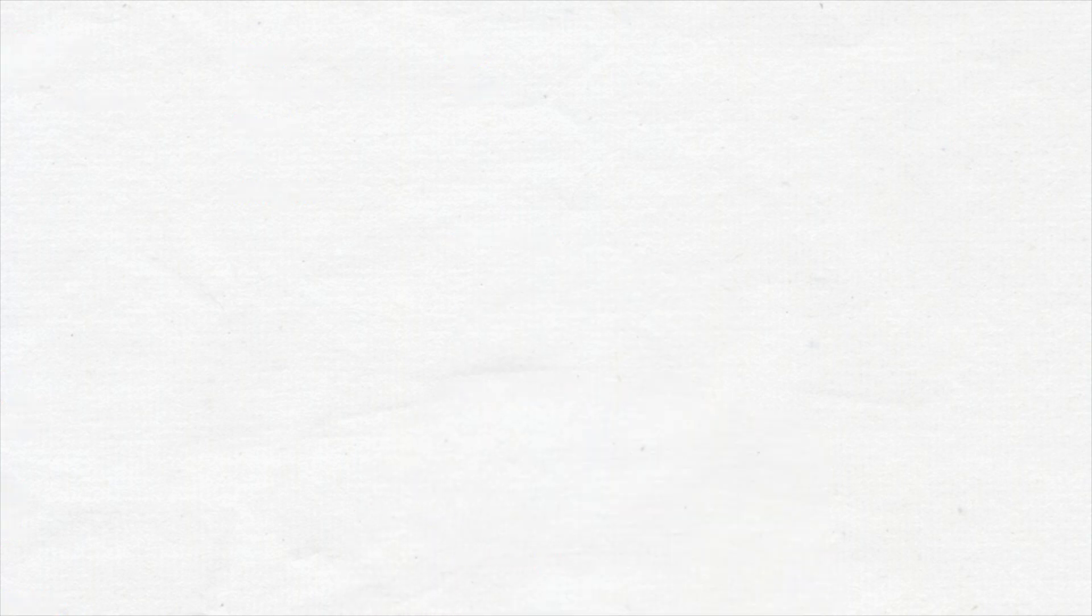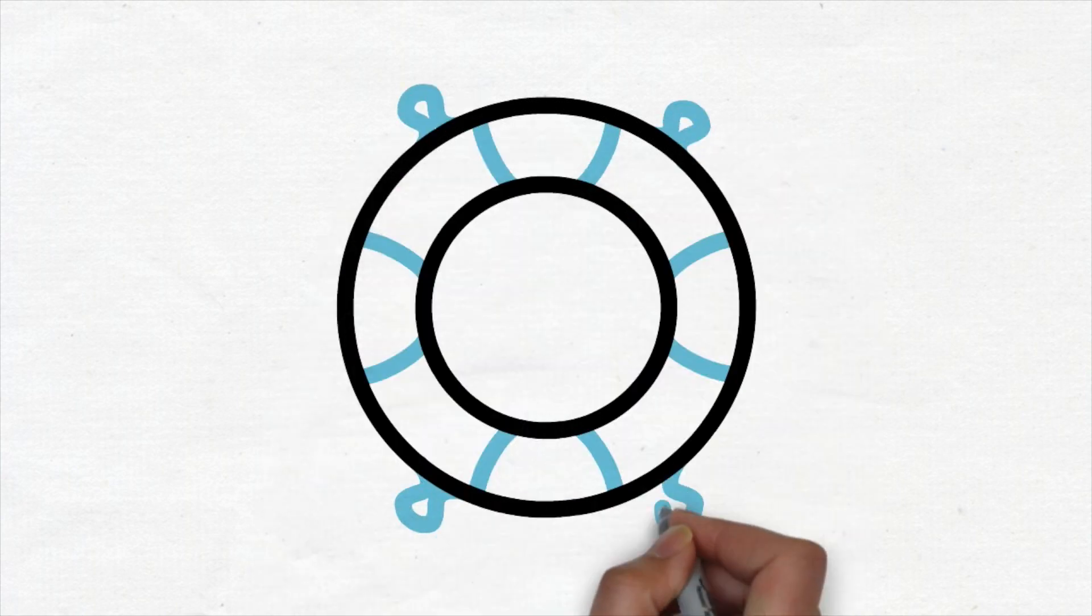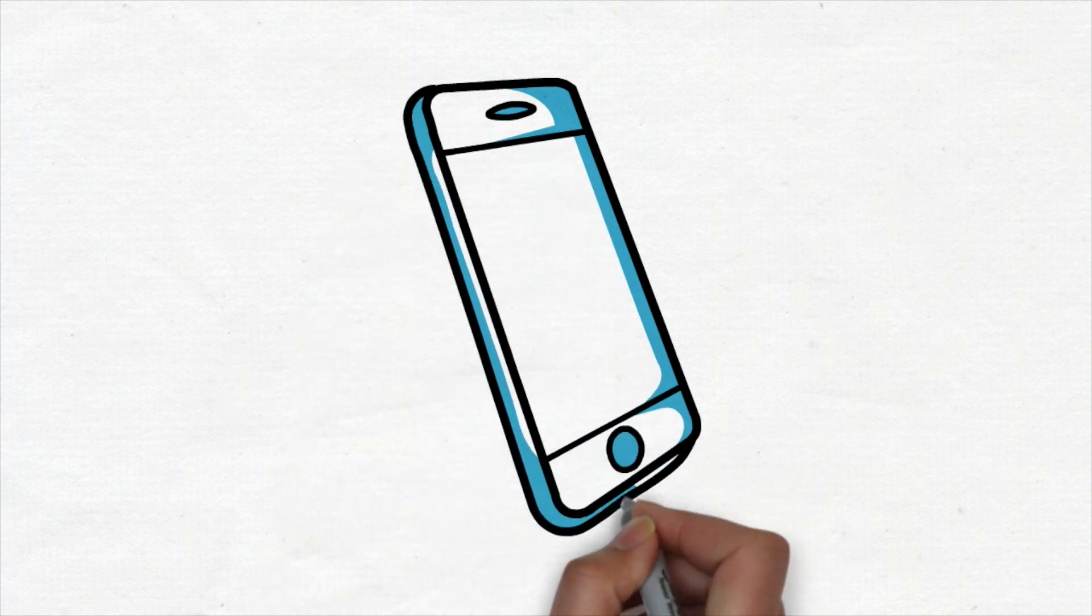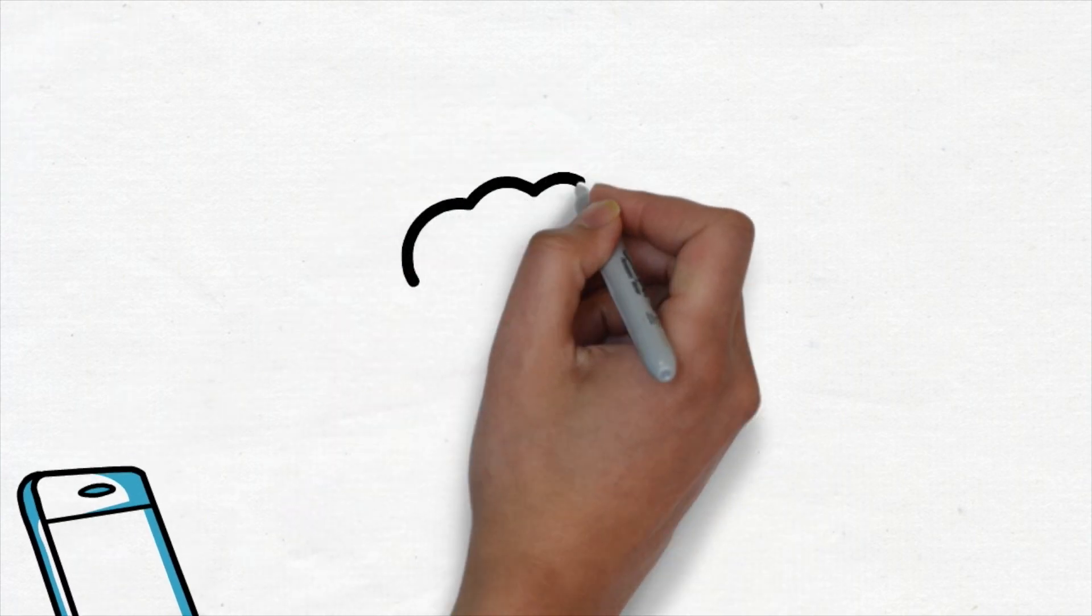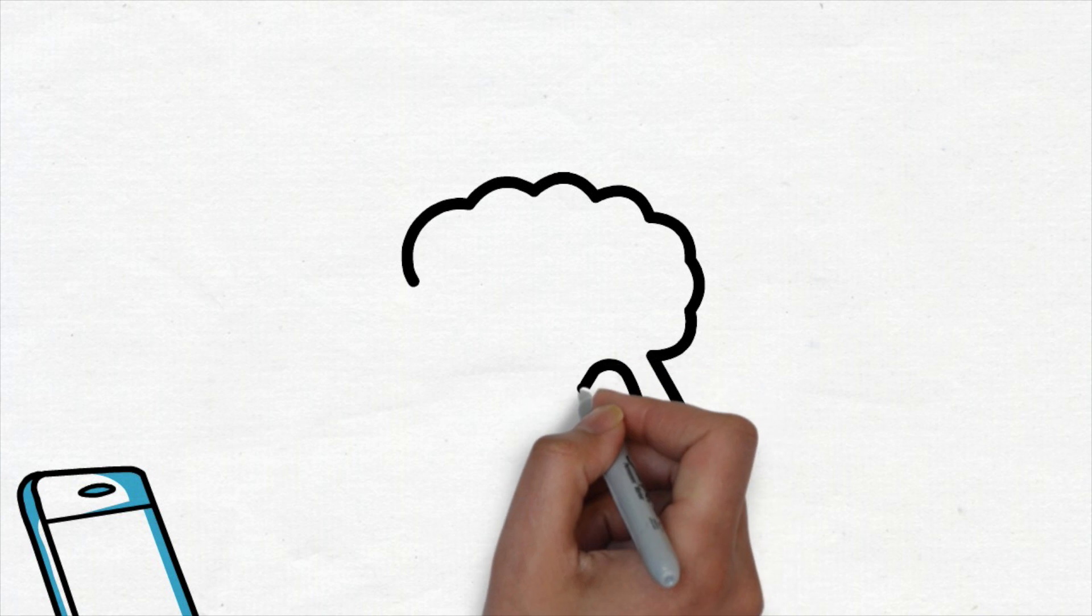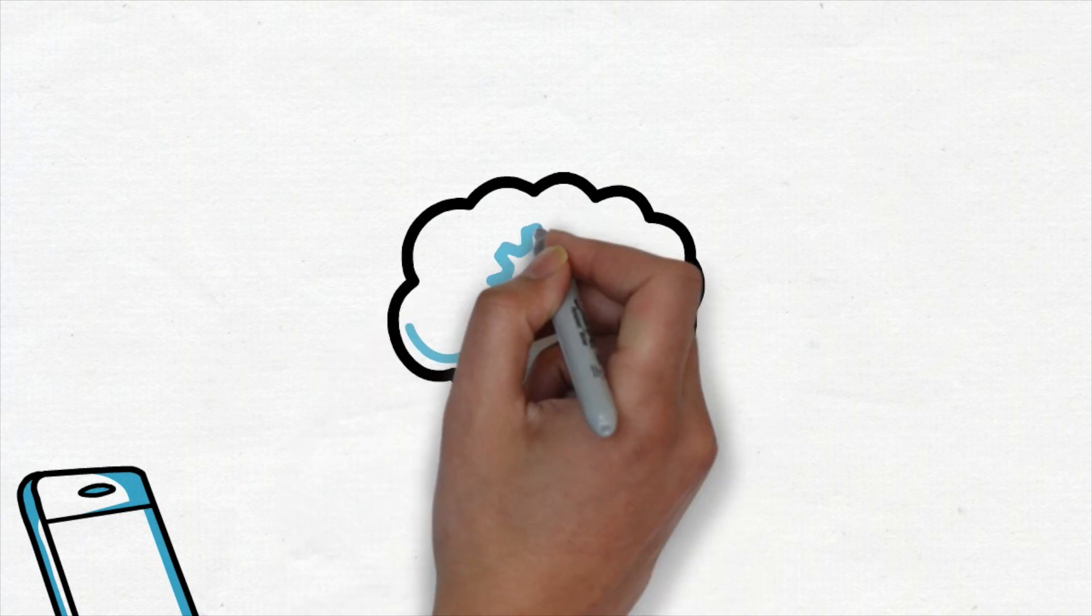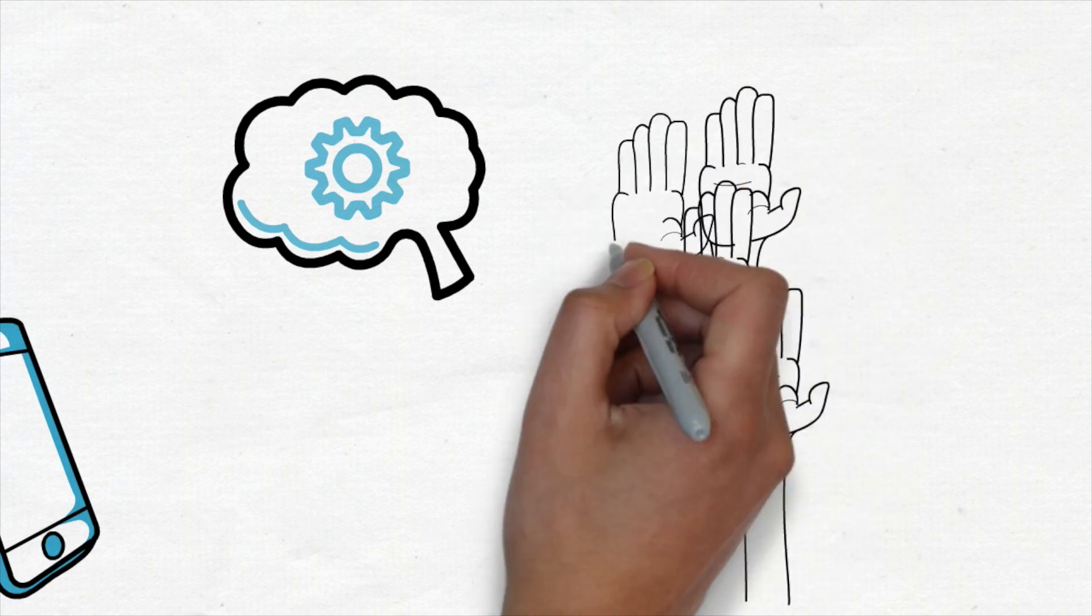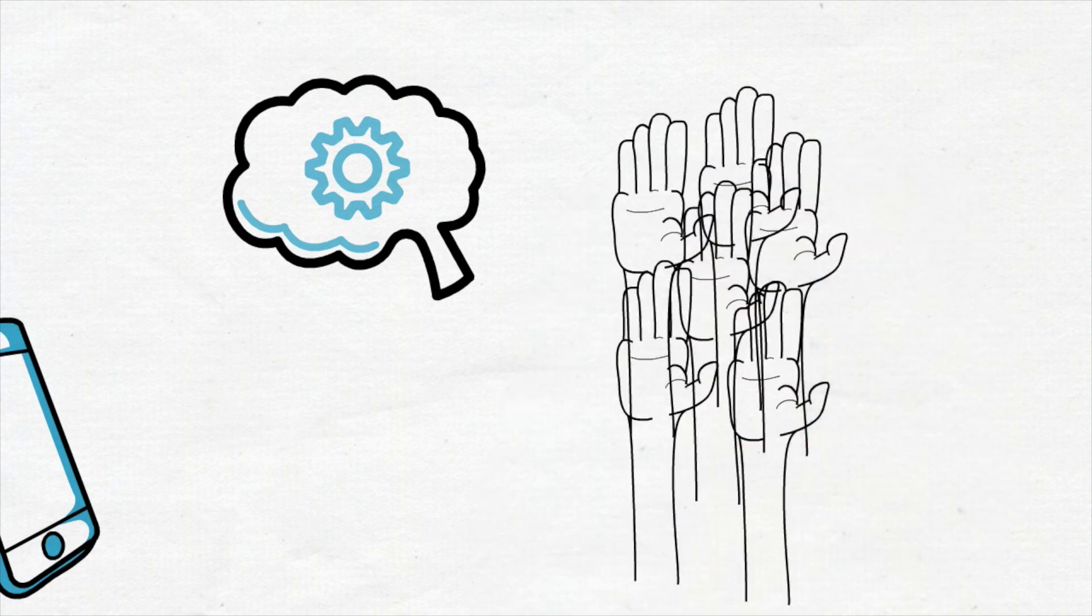First, call for help. This might mean pressing an emergency buzzer or getting someone to call your supervisor. You may need help in the form of more brains or more hands. Sometimes you need help with figuring out the problem, and other times there's just so many tasks that need to be done that you can solve the problem more rapidly with more people.